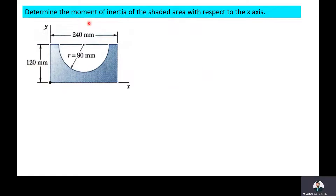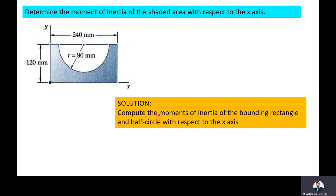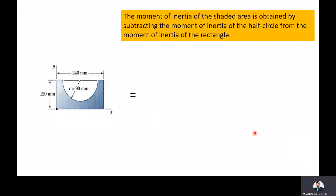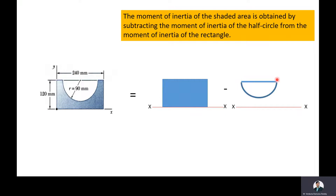The given problem is: determine the moment of inertia of the shaded area with respect to the x-axis. We will compute the moment of inertia of the bounding rectangle and half circle with respect to the x-axis. The moment of inertia of the shaded region is to be computed about the x-axis by subtracting the moment of inertia of the semicircle about the x-axis from the moment of inertia of the rectangle about the x-axis.